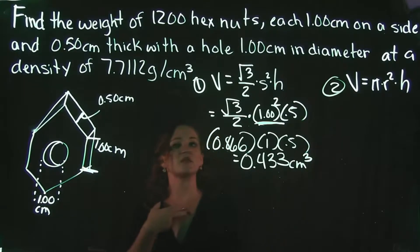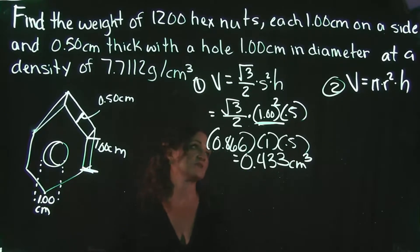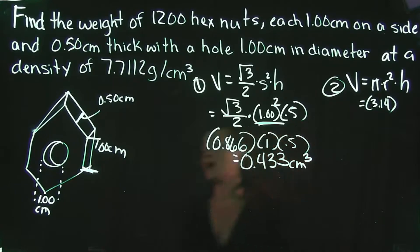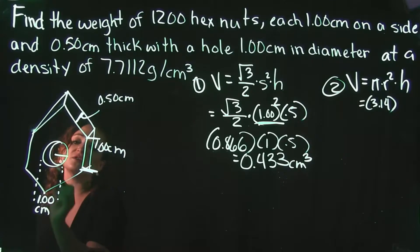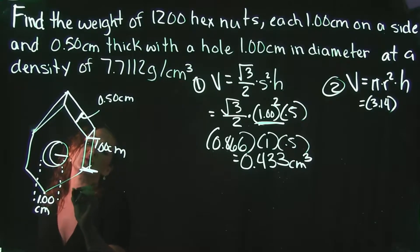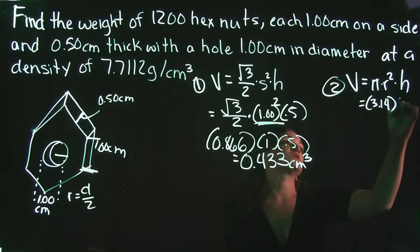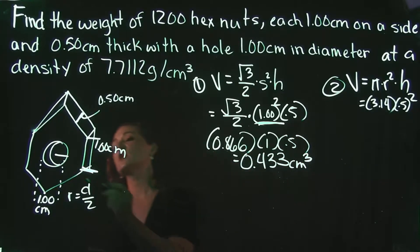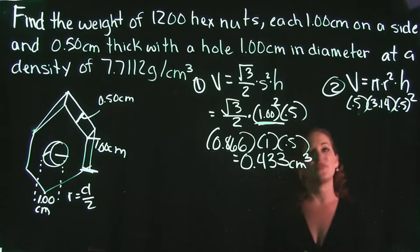Step 2 is finding the volume of the right cylinder so we can subtract it. The formula is pi times radius squared times height. The diameter of the hole is 1 centimeter, so the radius is 1 divided by 2, which is 0.5 centimeters. We square the radius and multiply by the height, which is also 0.5 centimeters.